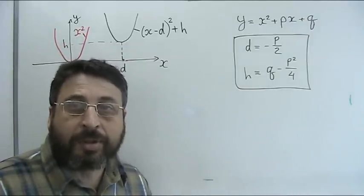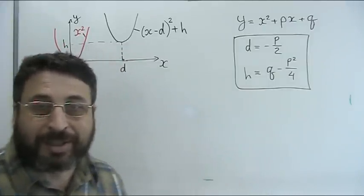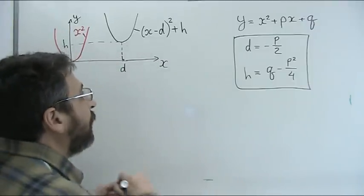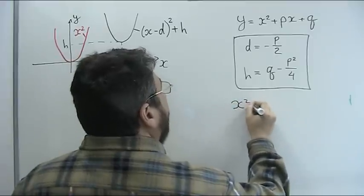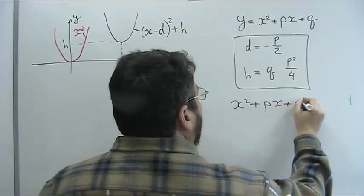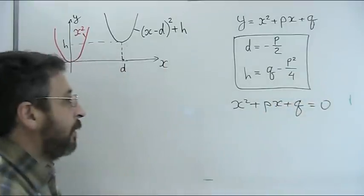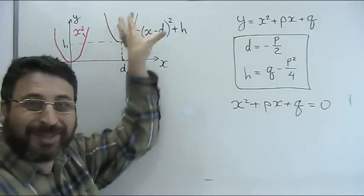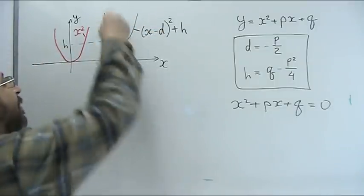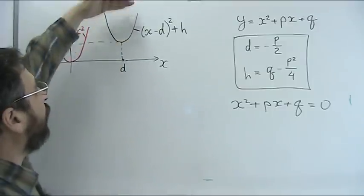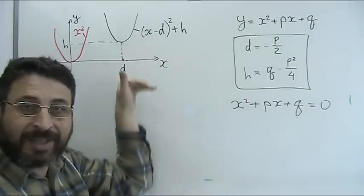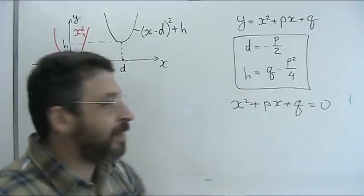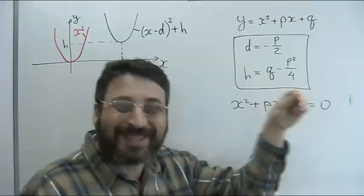Based on this approach we can not only build graph of quadratic function but also can say something about solution of quadratic equation x² + px + q = 0. For example, in the case when h is positive, as I built here in my example, the plot of my function is all above x axis. It never intersects. There are no solutions to this equation. No roots.